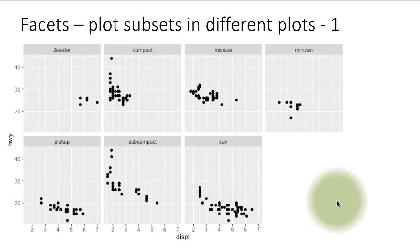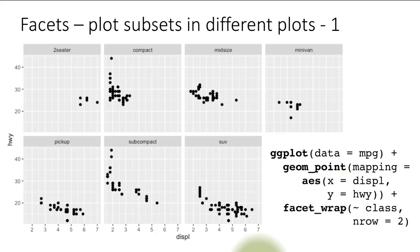You will be quite amazed to see how easy this is to do with ggplot. Very simple. Here I'm saying ggplot data is mpg, geom_point mapping displacement is x, highway is y. Up to this point it's exactly the same code that you would use to do a simple scatter plot of all the points.